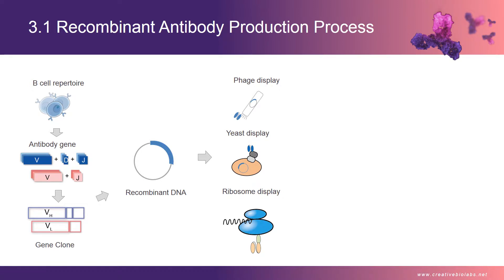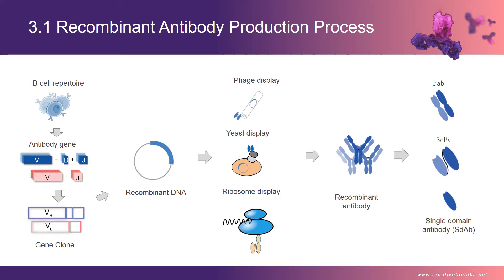Yeast display makes human antibody expression more superior because the yeast expression system is similar to mammalian cells. According to these procedures, some recombinant antibodies can be constructed successfully, such as scFv antibody fragments, Fab antibody fragments, and single-domain antibodies.